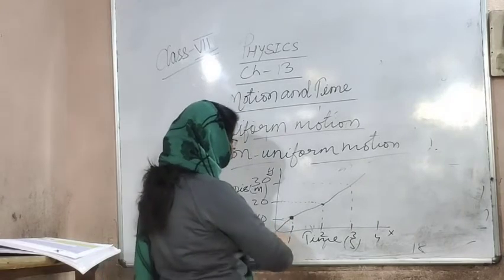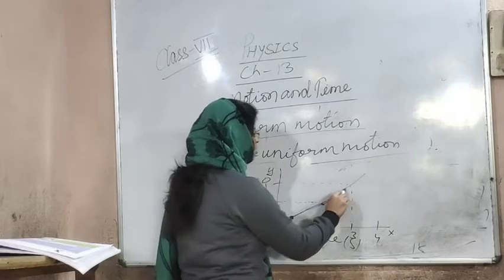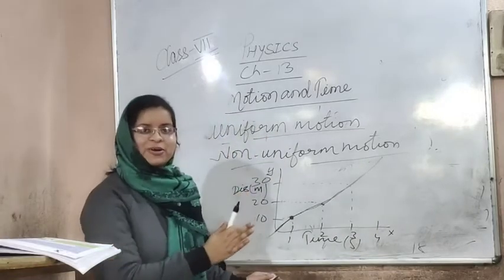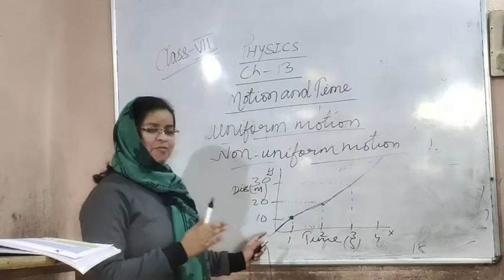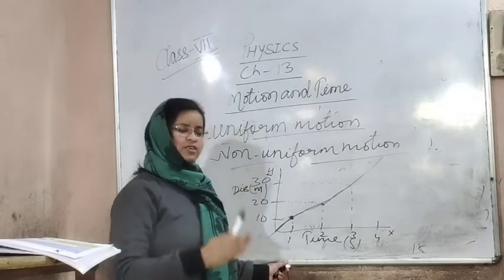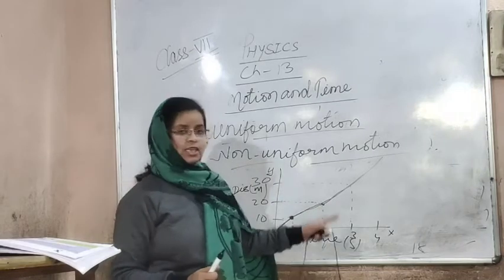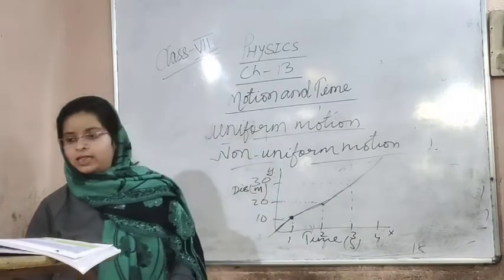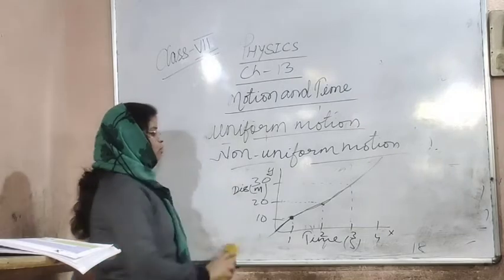When you plot this as a graph, the line of uniform motion goes straight. Maybe my explanation is going fast, but the line is straight. In uniform motion, this line goes straight and it is a straight path.